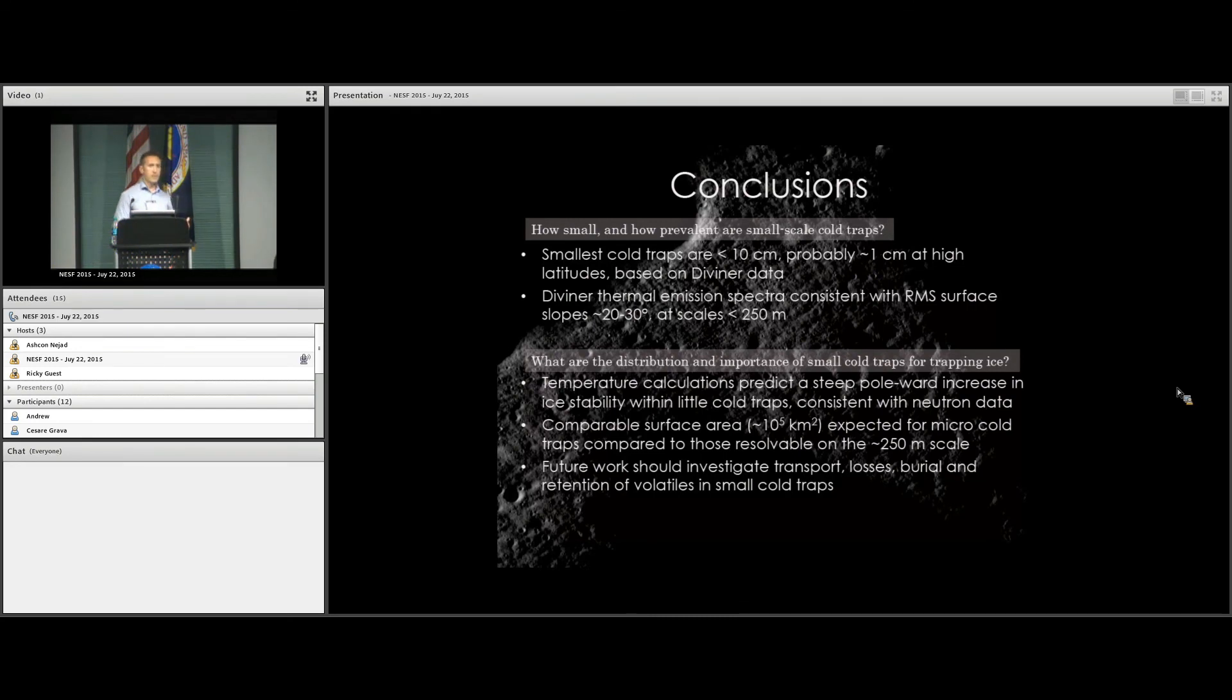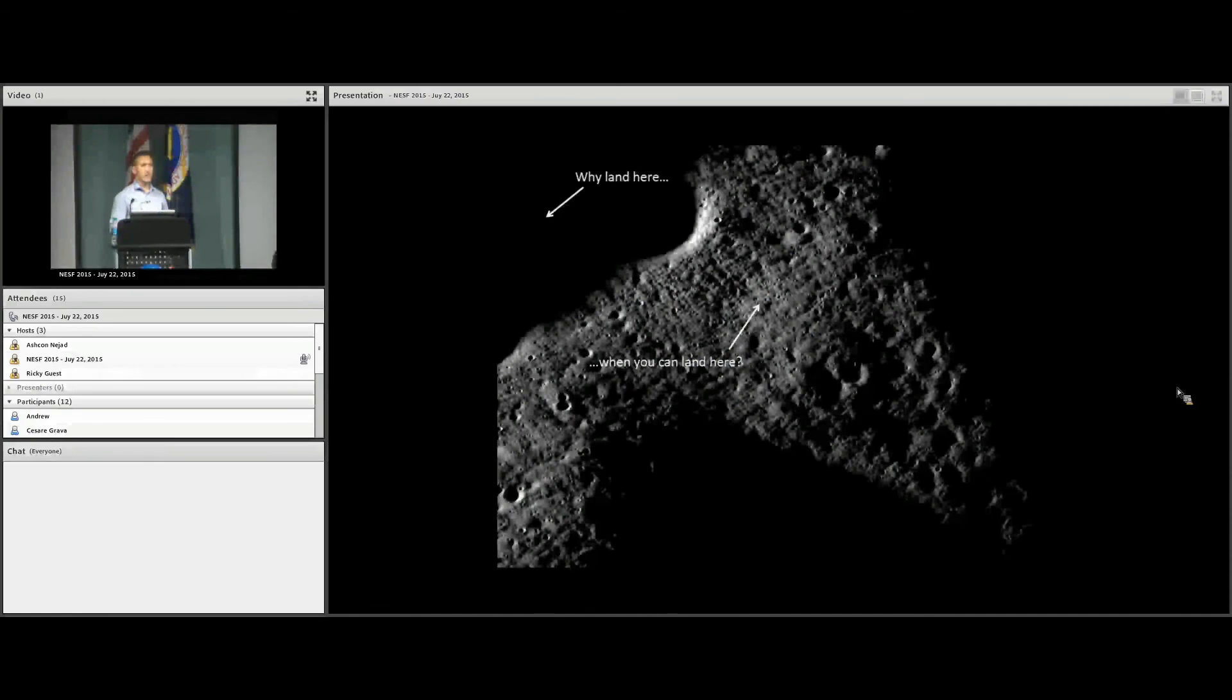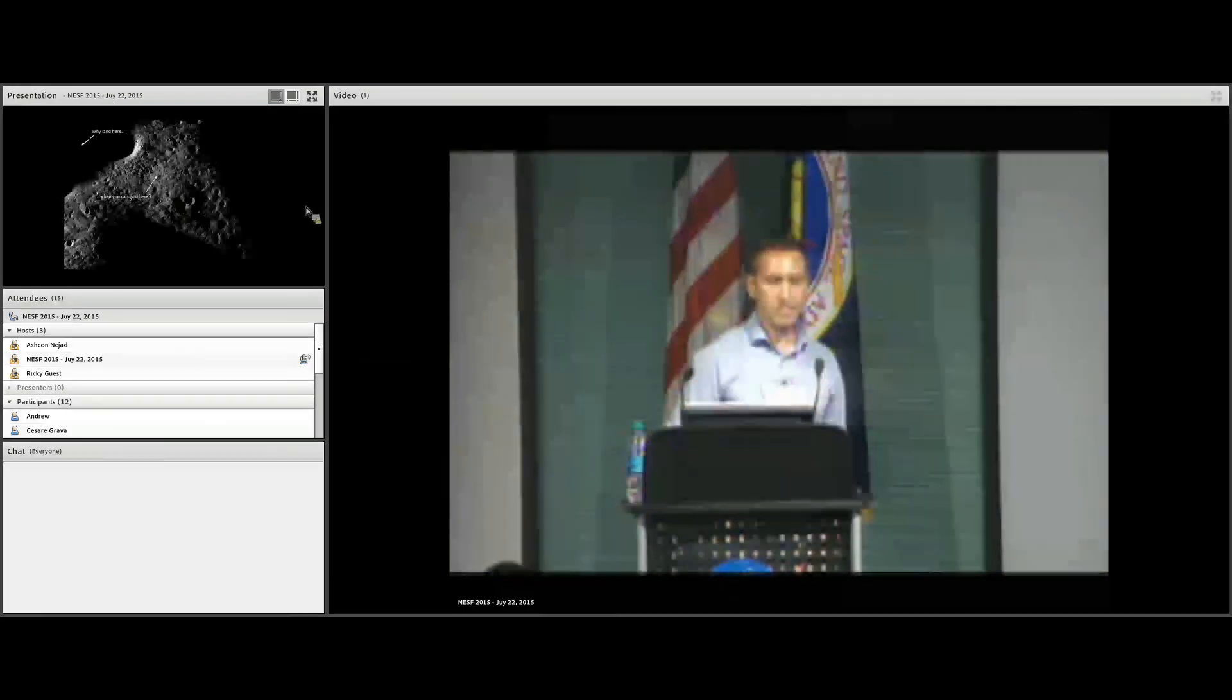It'll be interesting to look at what this means for the transport and retention of volatiles on the moon and other bodies, in the sense that now even places that looked like they were illuminated may actually have quite a bit of surface area to trap volatiles. One potential exploration-oriented point is that you may not necessarily need to go down into one of these huge PSRs to access volatiles of interest for ISRU or science. You could land in an area that is ostensibly illuminated, but within that area you'd find lots and lots of little cold traps, maybe of the meter scale, that you could go and excavate. Thank you very much.